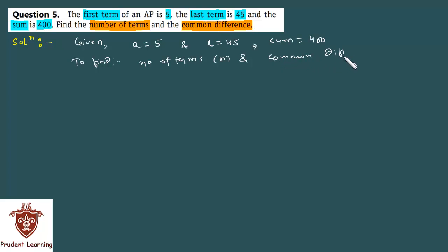First we find n. We know that sum of n terms of an AP is equal to n by 2 into A plus L. When last term is known, we use this formula. Now sum is given as 400, substitute the values.